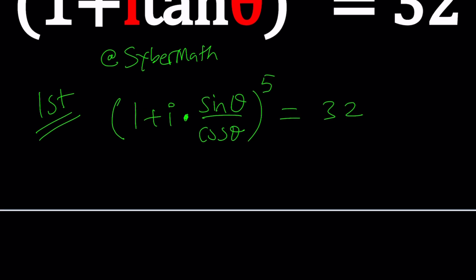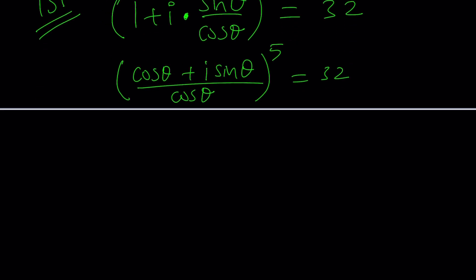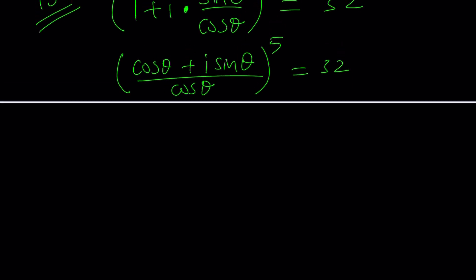First of all, let's simplify this. I will make a common denominator. So it'll be cosine theta plus i sine theta divided by cosine theta to the fifth power. I know it's tempting to take the fifth root, but I'd like to caution against it because a complex number has five fifth roots. We have to be very careful not to just oversimplify.